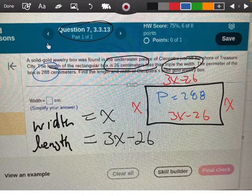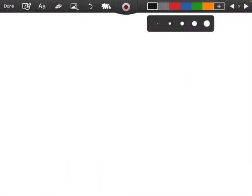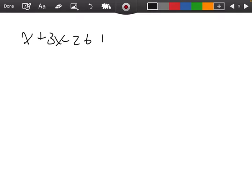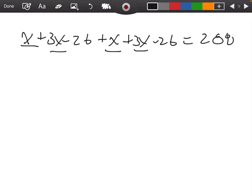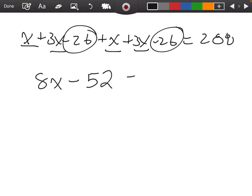Okay, so on the next slide, I'm just going to start adding up all the pieces. I have x plus 3x minus 26 plus another x plus another 3x minus 26 equals 288. So x and 3x is 4, and one more is 5, and three more is 8, and minus 26 and another minus 26 should be minus 52 equals 288.